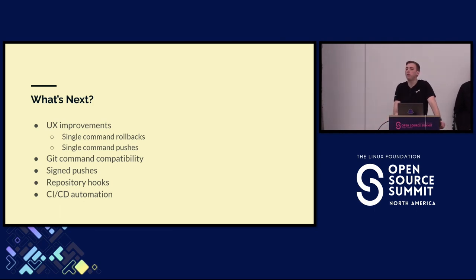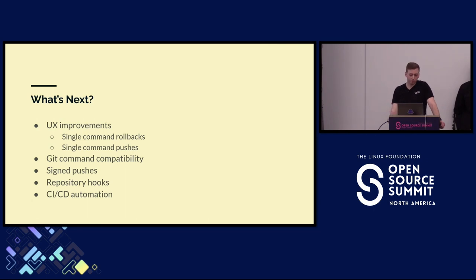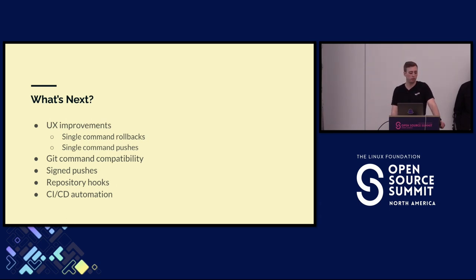We want to make it easy so you don't have to think about what refs you have to push — there are multiple refs to worry about. Ideally that should be just one command with compatibility with existing Git commands so you don't have to think about it. Things we're looking at include repository hooks that can automate it for you so you can use your normal Git workflow and it just does all the GitTuff stuff under the hood. We're also looking into signed pushes because there's a lot of opportunity there, especially with the reference state log. It's not the top priority since no forge supports it yet, but it is something we want to work on.